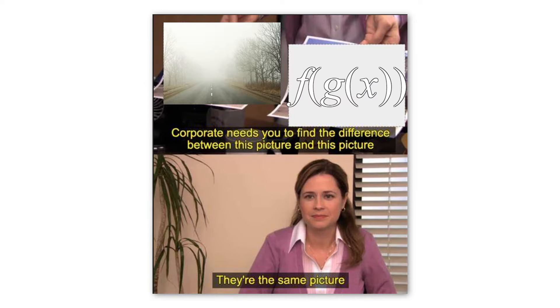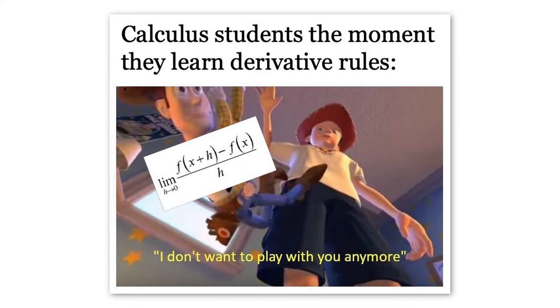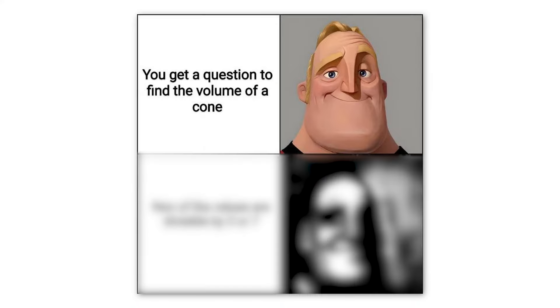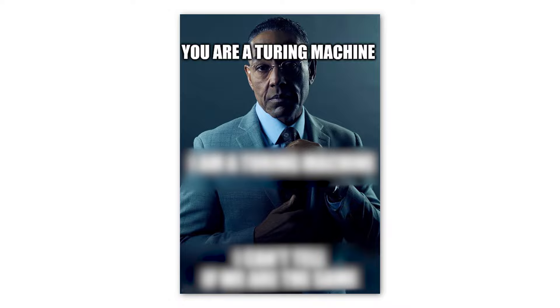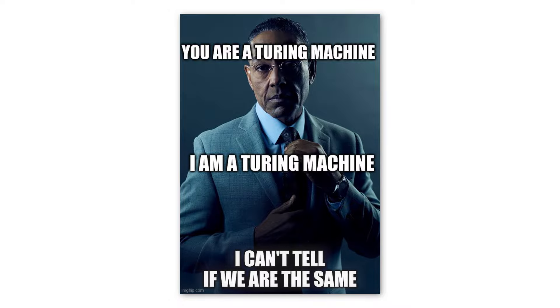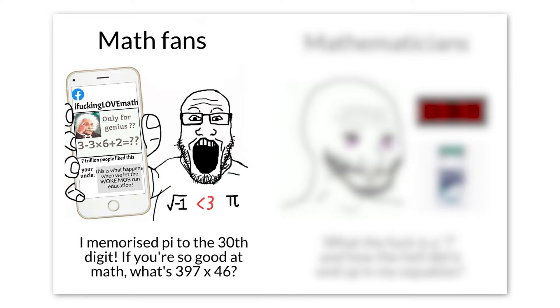Corporate needs you to find the difference between this picture and this picture. They are the same picture. Calculus students the moment they learn derivative rules. I do not want to play with you anymore. You get a question to find the volume of a cone. None of the values are divisible by 3 or 7. You are a Turing machine. I am a Turing machine. I cannot tell if we are the same. Math fans. I memorized pi to the 30th digit. If you are so good at math, what is 397 times 46?